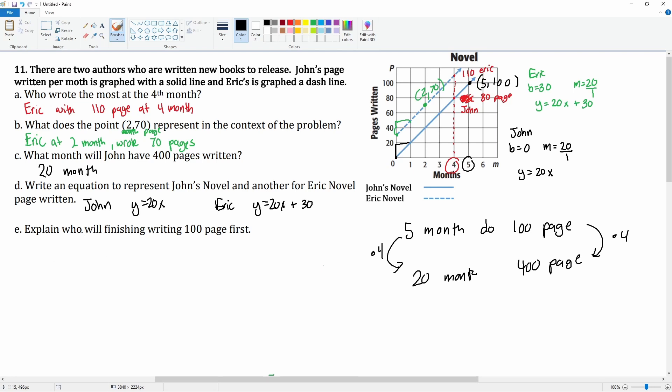Okay, explain who will finish writing 100 pages first. Well, let's take a look at 100 pages right here. So Eric looks like he made 100 pages at the, what, 3.5 months. So Eric reached 100 pages at the 3.5 month. Okay, you see how he reaches it right here?